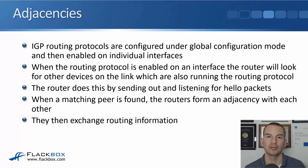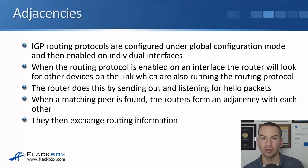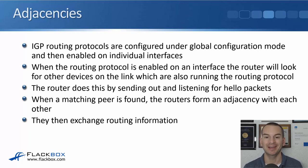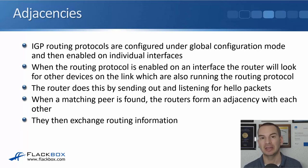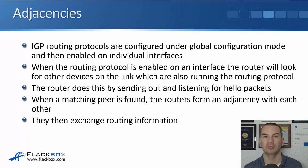Our interior gateway routing protocols — RIP, EIGRP, and OSPF — are configured under global configuration and then they're either enabled or not on the router's individual interfaces. When the routing protocol is enabled on an interface, the router will look for other devices on that directly connected link which are also running the routing protocol in order to peer with them. The router does this by sending out and listening for hello packets for that particular routing protocol. And when a matching peer is found, the routers form an adjacency with each other and exchange routing updates.